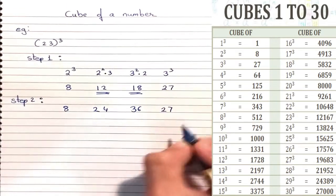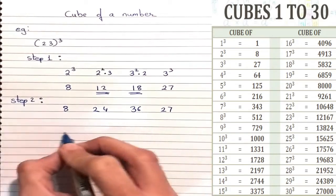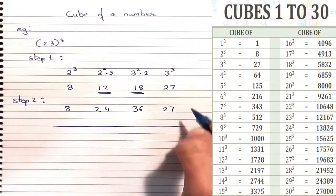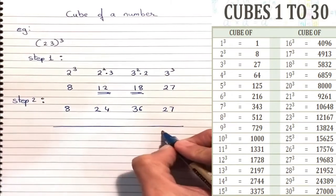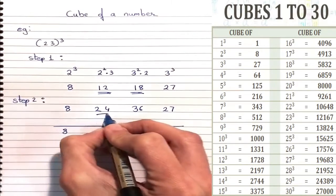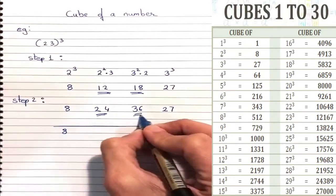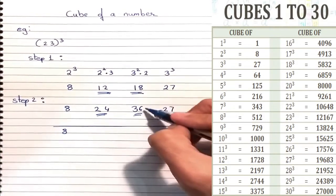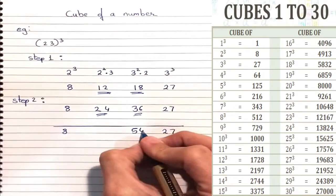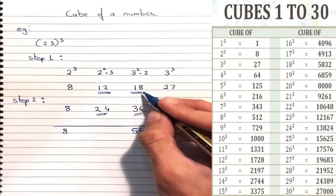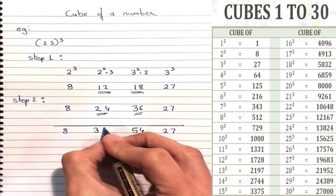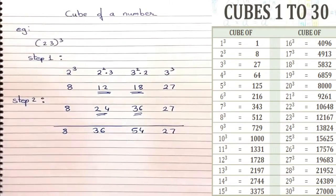The first and the last number remain the same. So let's take the first and last number as they are. Now we are going to add the middle numbers. So 18 plus 36 is 54 and 24 plus 12 is 36.